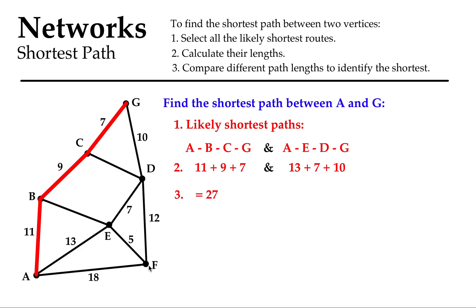So the ABCG one that's in red there is 27 units long. It might be kilometers, it might be centimeters, who knows, because the network can represent all different types of realities. And we'll add the other one up and we see that it's 30 units long. So when comparing those two, I reckon the first one is shorter.